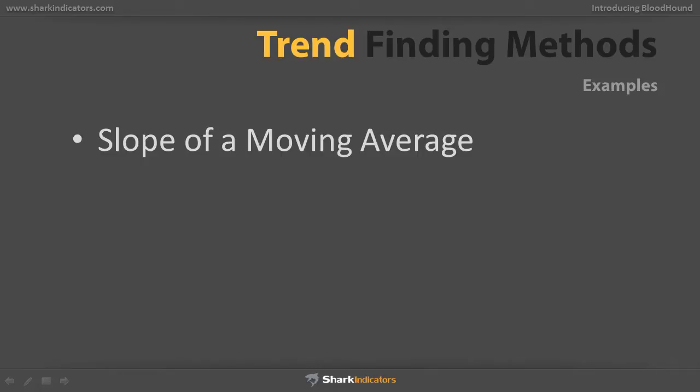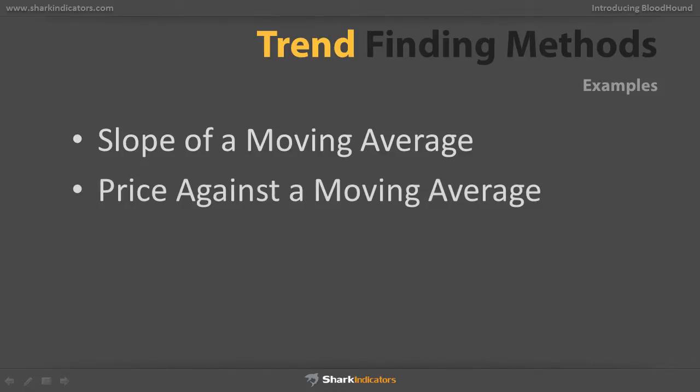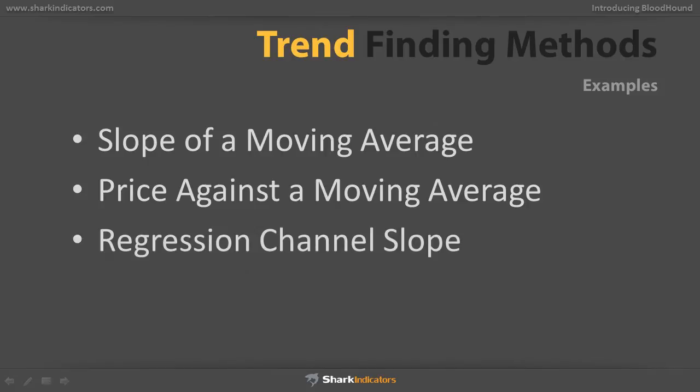There are a variety of methods that traders use. Some of them include checking the slope of a moving average — for example, a 100 EMA or 55 EMA. In this example, we're actually going to be using a 55 EMA. Some other methods include seeing if the closing price is above or below a particular moving average, and also checking the slope of the regression channel. In this tutorial, we're going to be doing the first one: checking the slope of a moving average.